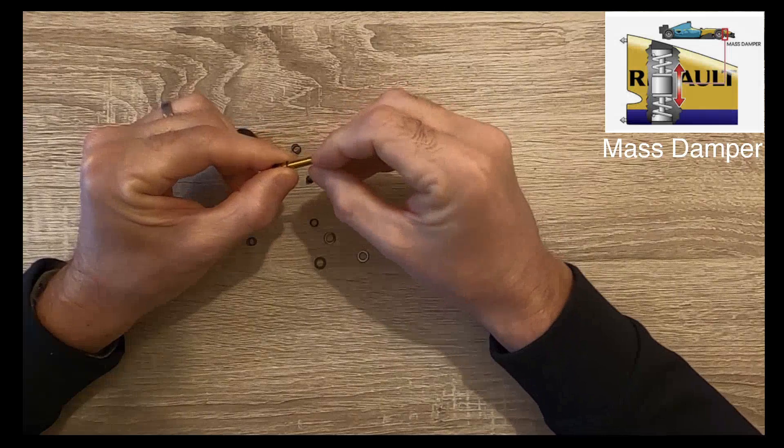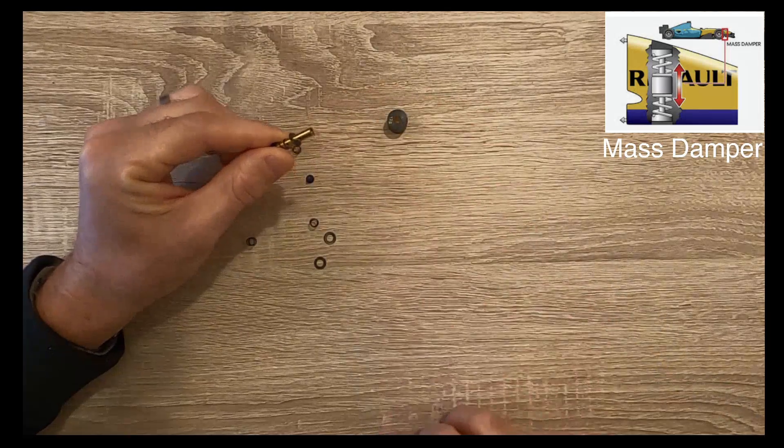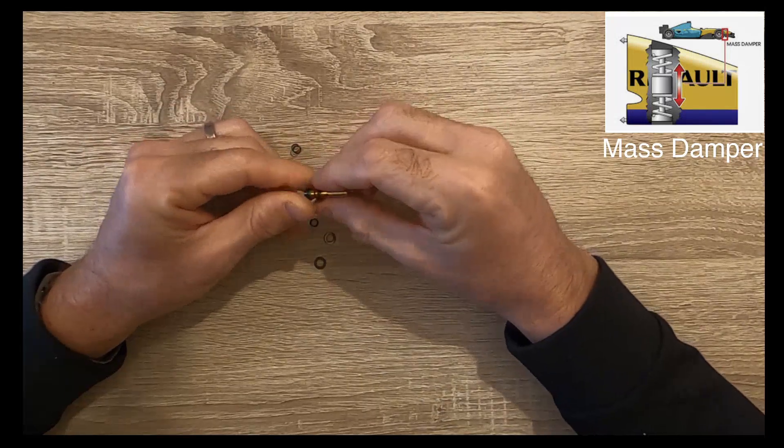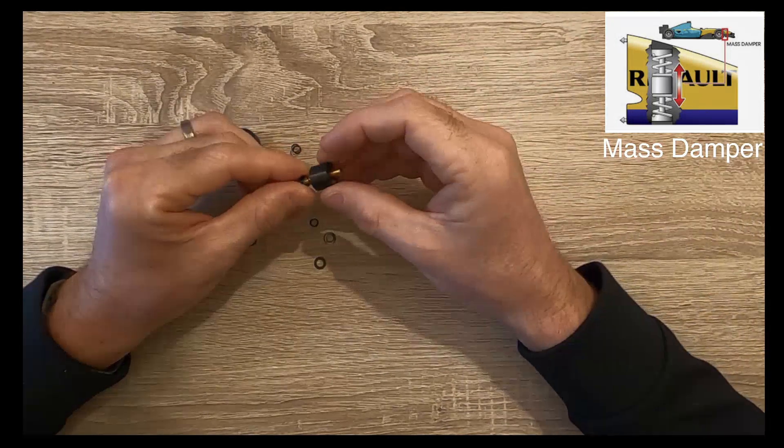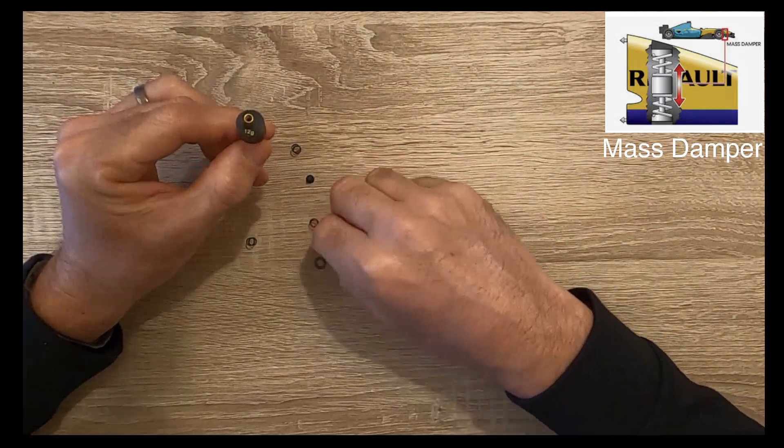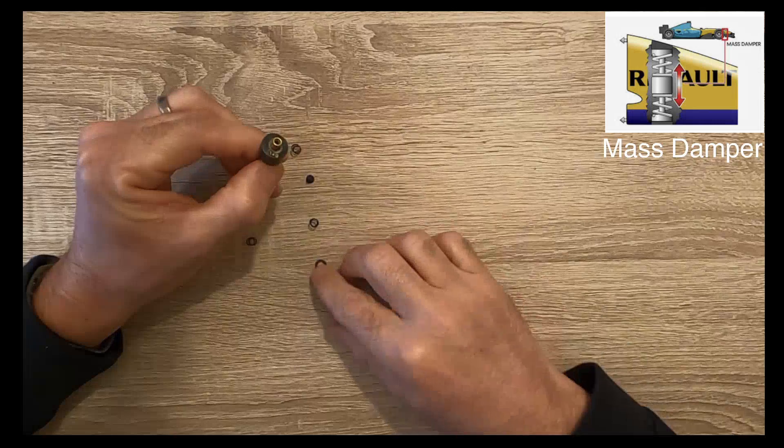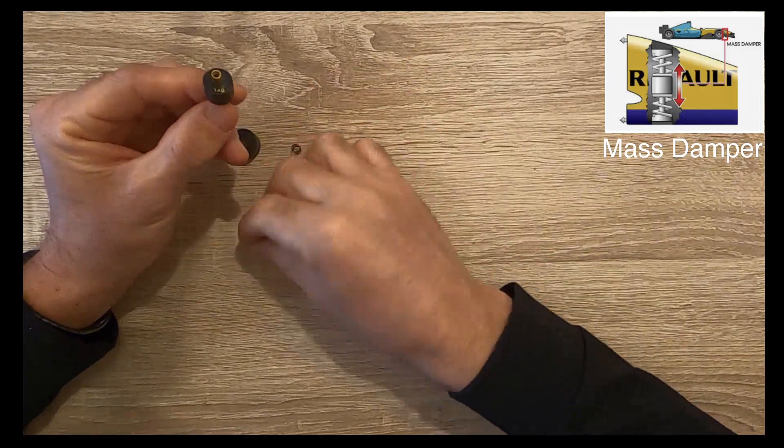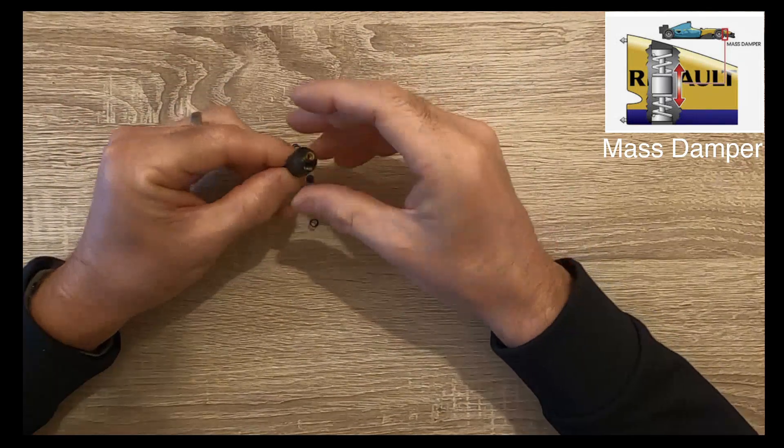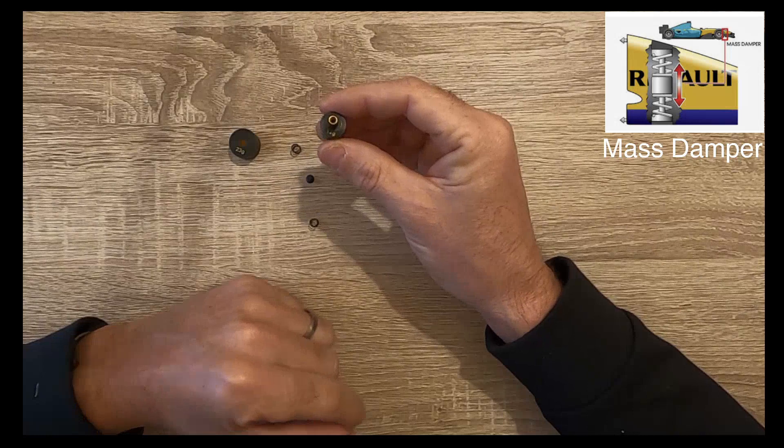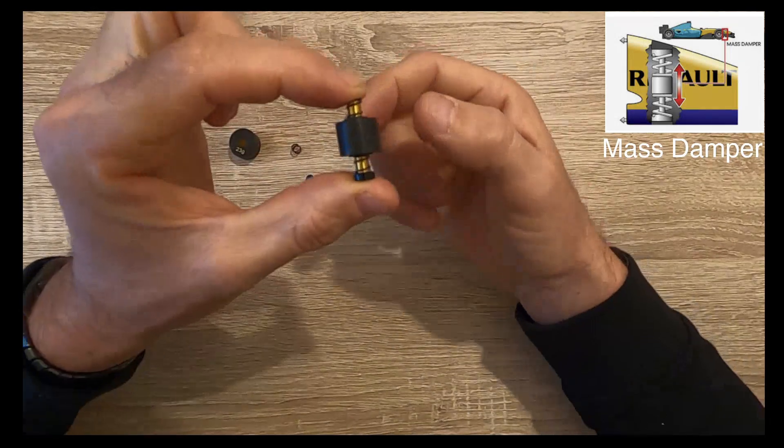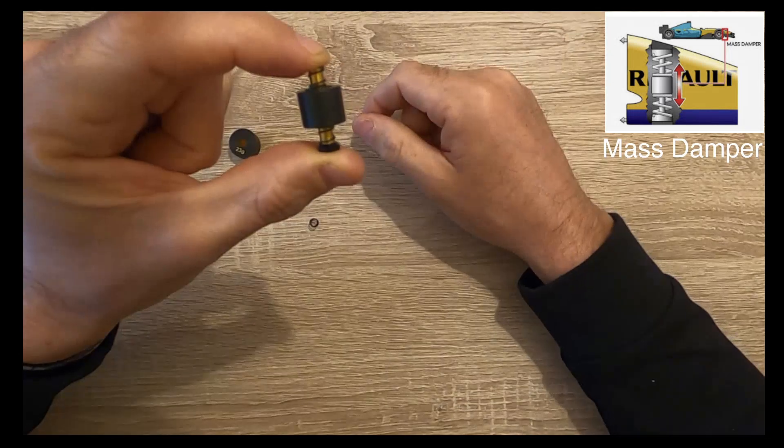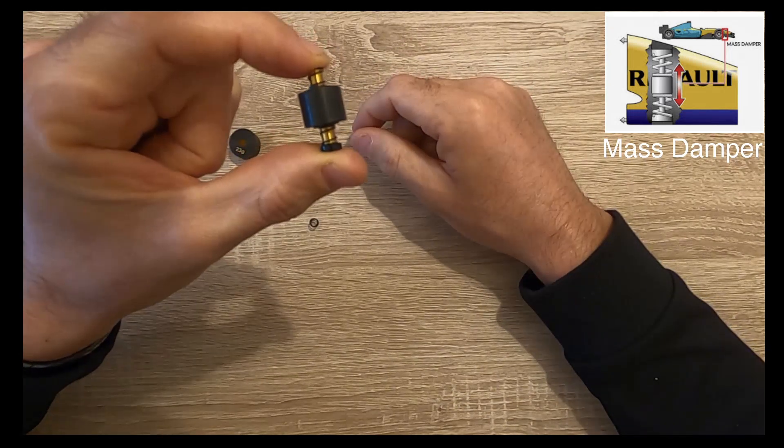Then you're going to place your weight - this is the 12 gram weight. Then you're going to pop a couple more shims back on, and then making sure that you've got the same spring top and bottom, you've now built your mass damper. So this moves up and down the post with the oil, with the springs, with the weight as you go over the bump.